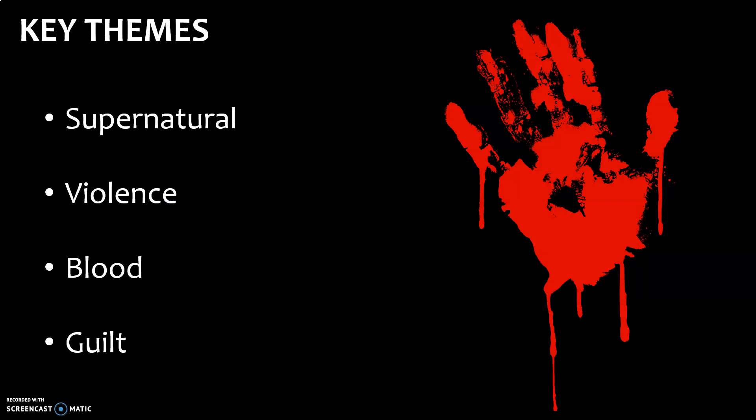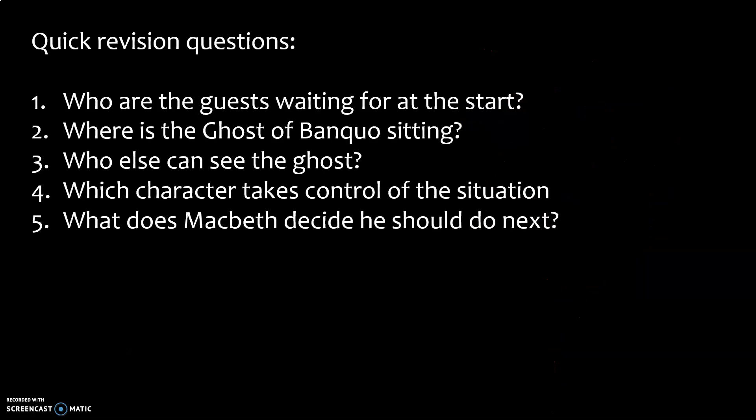Key themes in this scene: the supernatural with the ghost, but also the violence which has caused the ghost to appear. The idea of blood and the idea of guilt come through strongly. Some quick revision questions — pause this slide, have a go at answering those questions, write down your answers. If you don't know them, go back through the video and find the answers. It's really important you understand what you're looking at and hearing, otherwise your revision isn't working as well as it could.